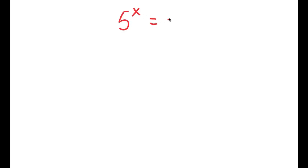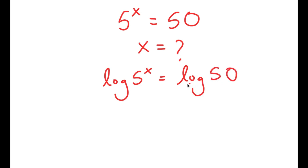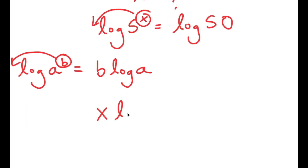Now in this video, I'm going to solve the equation 5 to the power of x is equal to 50. To solve this and find the value of x, I'm going to start by taking the log on both sides. So I get log of 5 to the power of x is equal to log of 50. If I have something in the form log of a to the power of b, I can move b to the front, turning it into b times log a. So x times log 5 is equal to log 50.